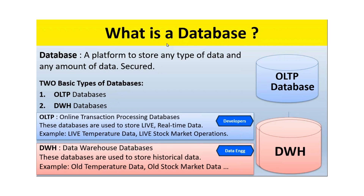So what we've learned so far: a database is a platform to store any type of data, any amount of data, with no restrictions, completely secure. OLTP is for live, online transaction data — like a live cricket match or a live temperature sensor feed. The data warehouse stores history — for example, when you log into LinkedIn you see the last 365 days of profile visits.